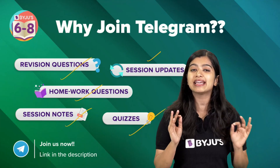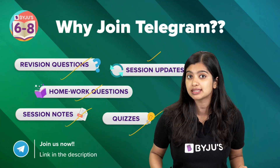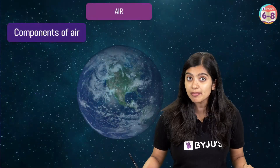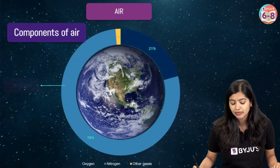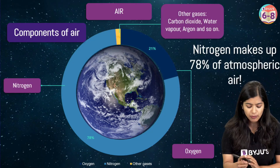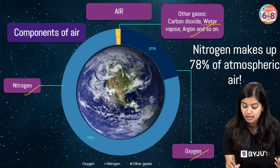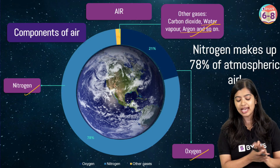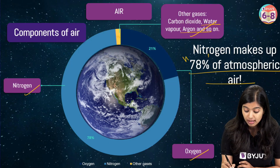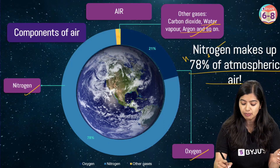Without wasting any more time, let's get started with understanding the nitrogen cycle. Nitrogen is one of the gases present in the atmosphere. The air in the atmosphere is a mixture of gases — nitrogen, oxygen, and other gases such as carbon dioxide, water vapor, argon, and so on. We see that 78% of the atmosphere is made up of nitrogen.